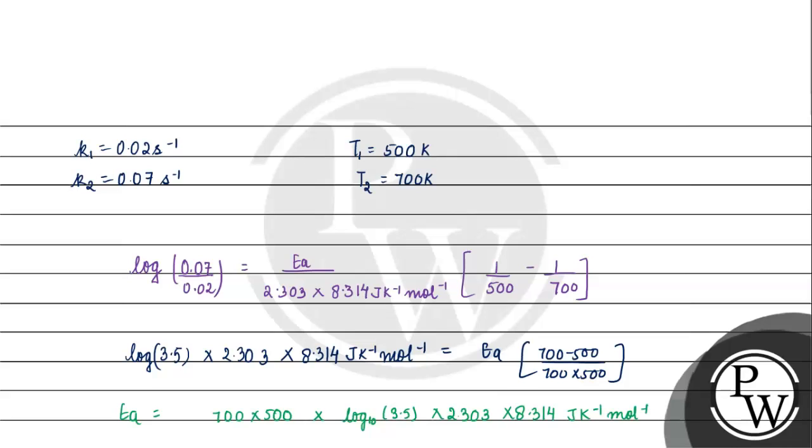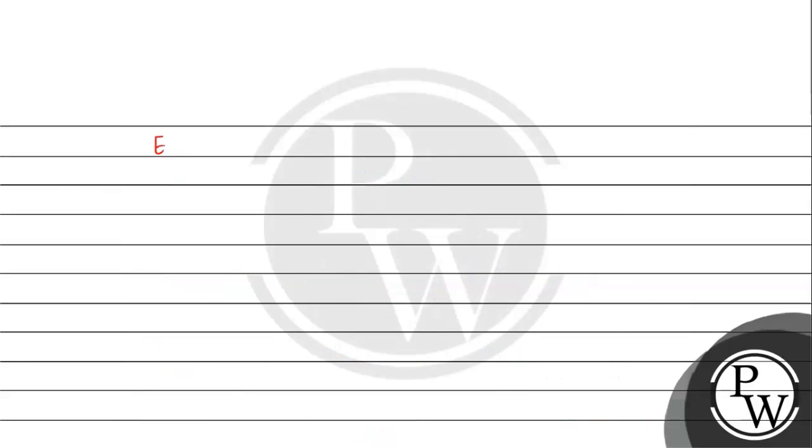Here we have kelvin and kelvin, divided by 200 kelvin. Kelvin cancels out. The energy of activation will come out to be 18,000. If we write in kilojoule terms, energy of activation equals 18.23 kilojoule per mole.